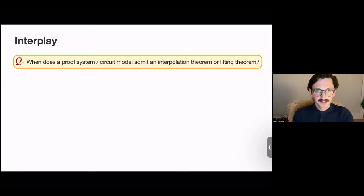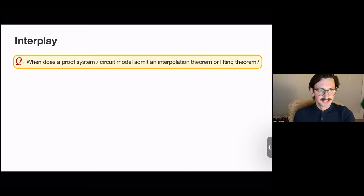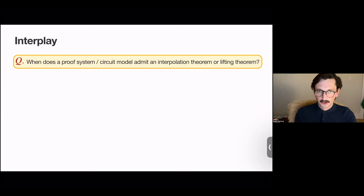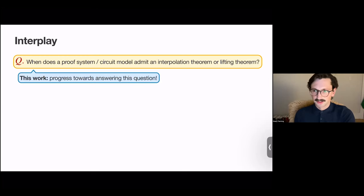These interpolation theorems and query-to-communication lifting theorems are very useful to establish. A very natural question is: when can we expect a proof system or a monotone circuit model to admit such an interpolation theorem or lifting theorem? For a given proof system, how can we tell if we can take its proofs and turn them into circuits? Or for a given circuit model, can we take its circuits and turn them into proofs? That's the question this paper makes progress towards answering.